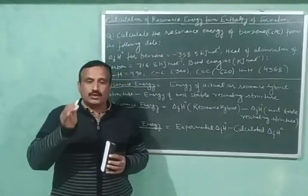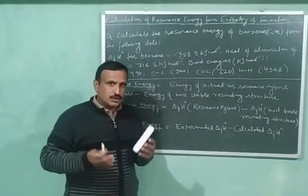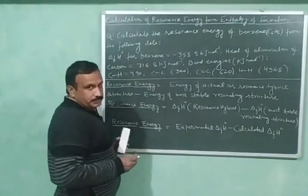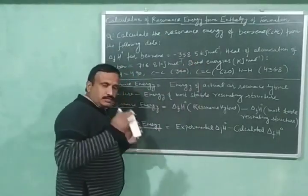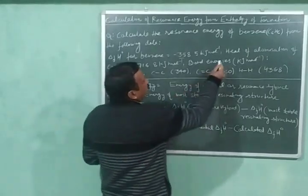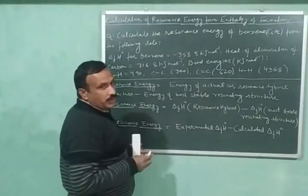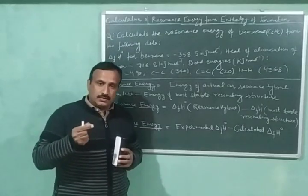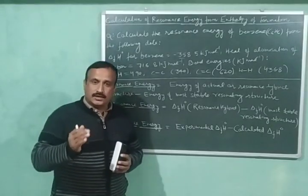Here we will calculate the resonance energy of benzene with the help of this data. We are given the standard enthalpy of formation for benzene, which is equal to minus 358.5 kilojoule per mole. This is the experimental enthalpy of formation. We are also given the heat of atomization of carbon, which is equal to 716.8 kilojoule per mole. Heat of atomization is the amount of heat or energy required to dissociate one mole of a substance into atoms completely.